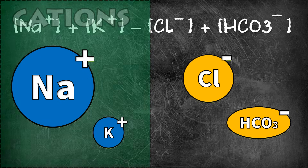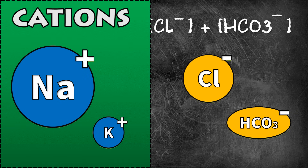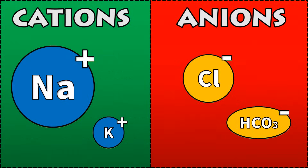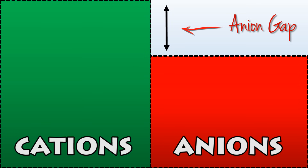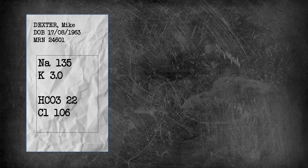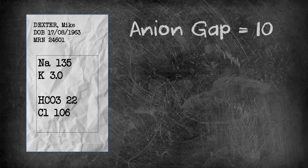Essentially, measured cations — sodium and potassium — minus measured anions — bicarb and chloride. This equation gives us the difference between them: basically, how many more cations are there than anions? Let's try that, shall we? Here's a set of values. What do you make the anion gap? Spoilers — it's 10.